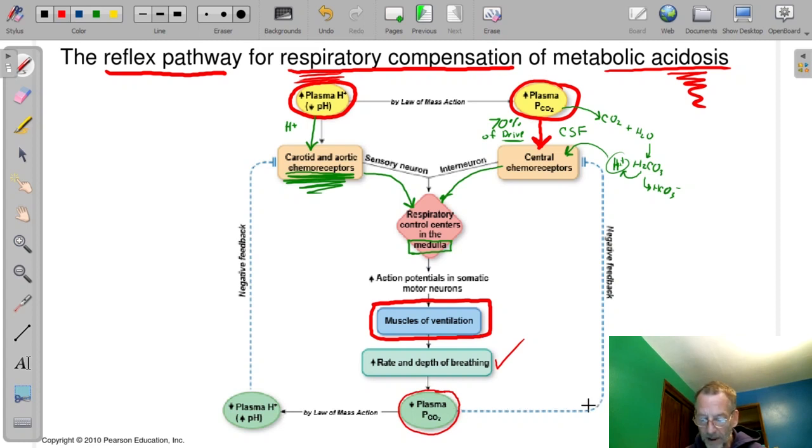And as we blow that off, we raise the pH. Less acid. And then the blue lines are just showing negative feedback. As the pH in the blood goes up, as we decrease the CO2 levels, that feeds back on the central chemoreceptors and we stimulate the respiratory muscles less. And the thing shuts down.